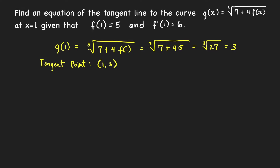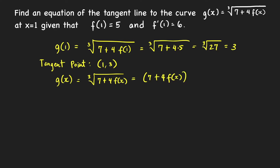Now let's find the slope of the tangent line at this point. The derivative gives the slope of the tangent line at a given point, so let's compute the derivative of G. Our G of x equals the cube root of 7 plus 4 times f of x, which can be written as 7 plus 4f(x) raised to one third.